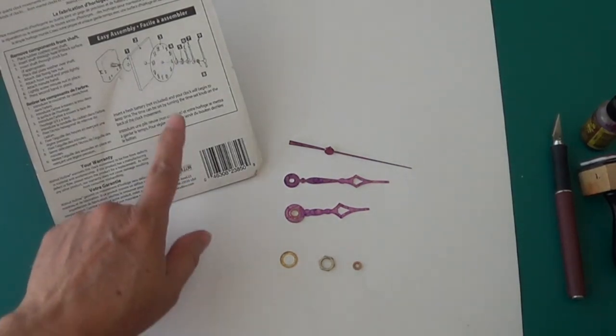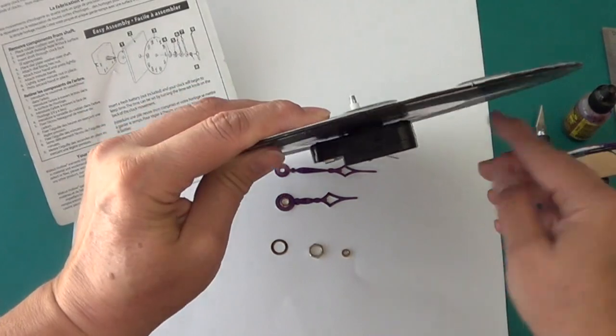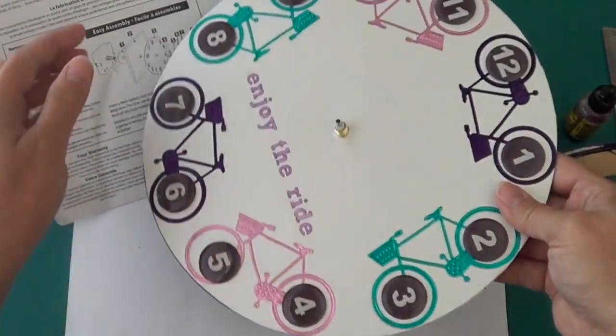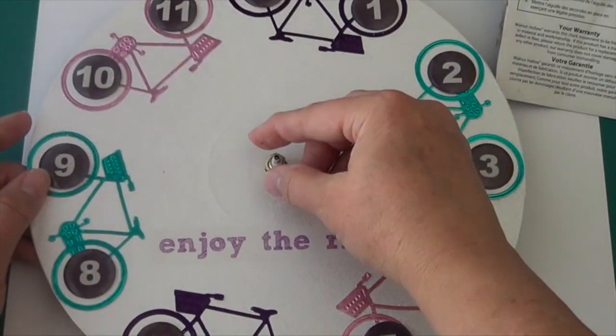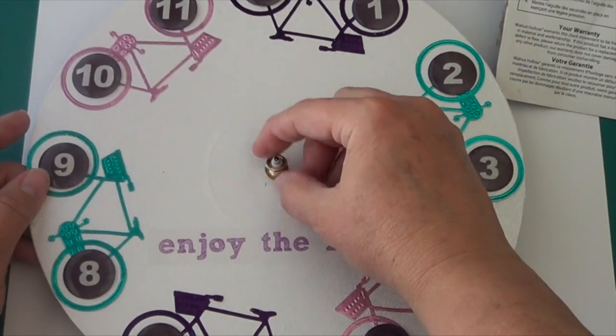The clock movement goes underneath. You poke the bolt up through the hole in the center of the record, then you add your little washer and your little nut and tighten everything down to secure it.